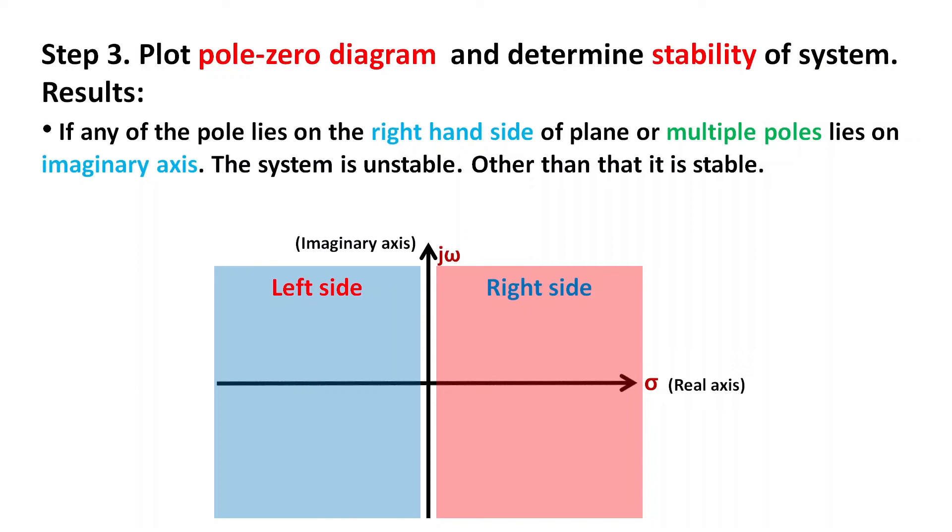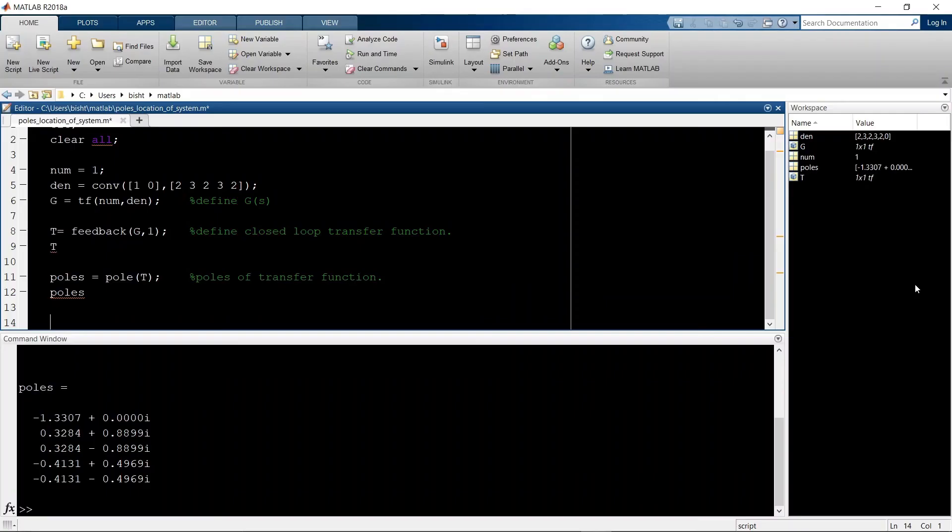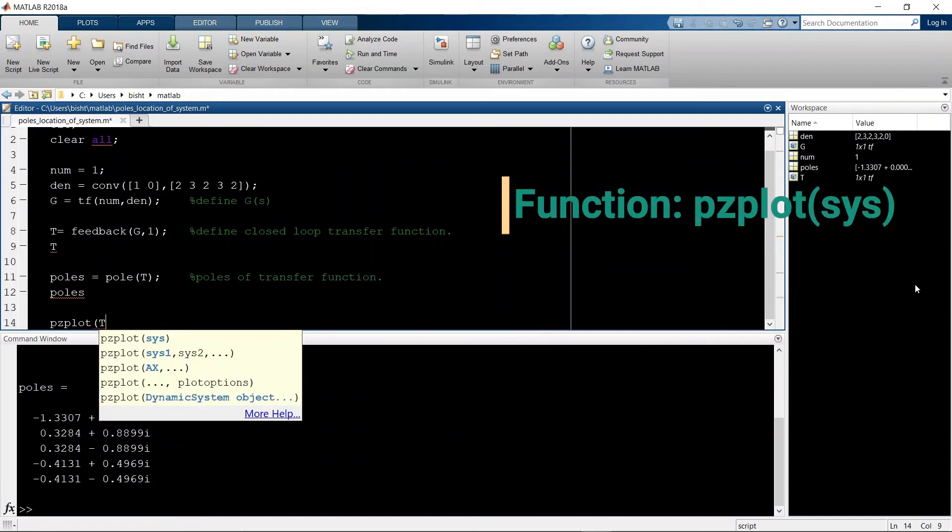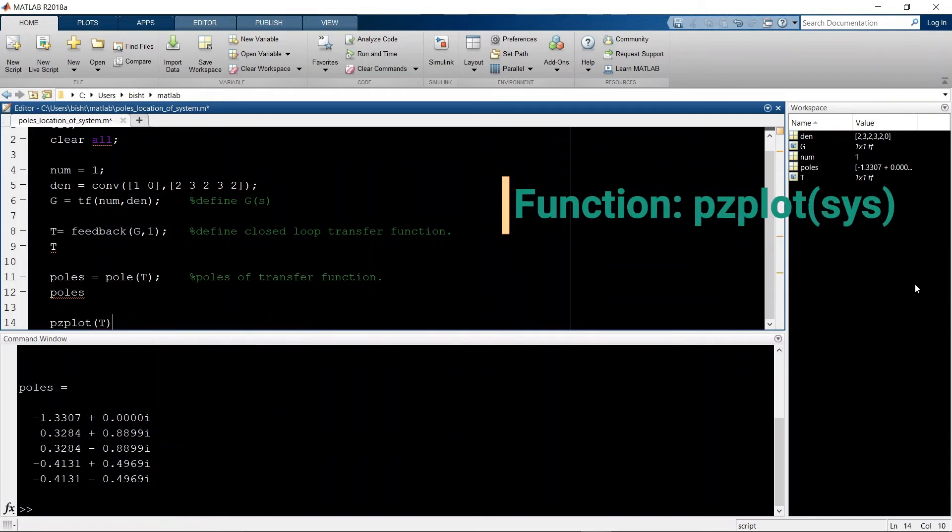You can manually plot the poles on paper and determine the stability of the system, but we are going to use MATLAB for that. To plot the pole-zero plot, we use the pzplot function.